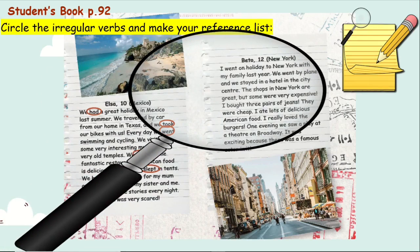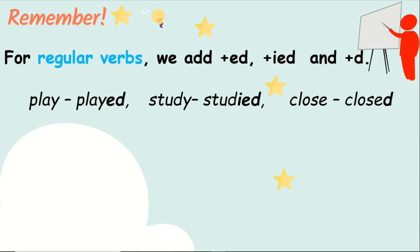Now let's move to Beto. 'I went on holiday to New York' — went / go. 'I bought three pairs of jeans' — bought / buy. 'We saw a play at the theater on Broadway' — saw / see. Great job!